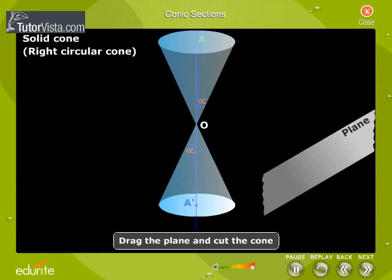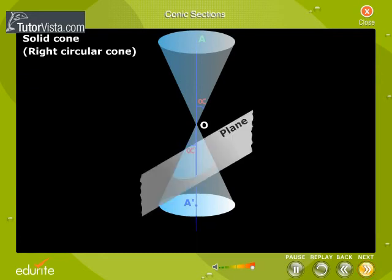Drag the plane and cut the cone. Click on the button. Now you see the sectional view which shows an ellipse whose axis is at an angle beta to the axis of the cone.